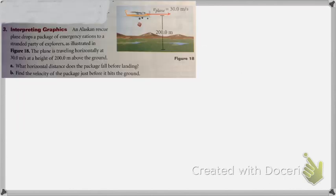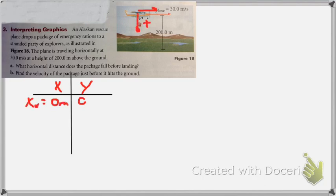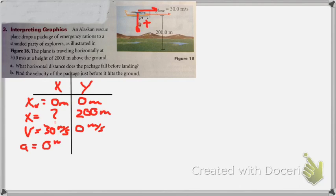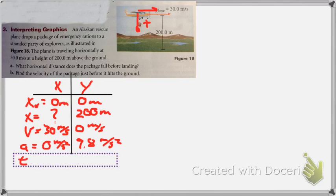So that leads us to the third problem, which is an Alaskan plane. It's very similar. An Alaskan rescue plane drops a package of emergency rations to a stranded party of explorers, as illustrated in Figure 18. The plane is traveling horizontally at 30 meters per second at a height of 200 meters above the ground. What horizontal distance does the package fall before landing? Find the velocity of the package just before it hits the ground. We're going to handle this in a very similar way. We're going to choose our origin system at the top with down as positive in the direction. The initial position is 0. Final position X we don't know. Y is 200. We have initial velocity in the X direction, 0 velocity in the Y. Acceleration is 0. Acceleration in the Y direction is 9.8. And we don't know time. Basically going through this a little faster because it's very similar to the last problem.